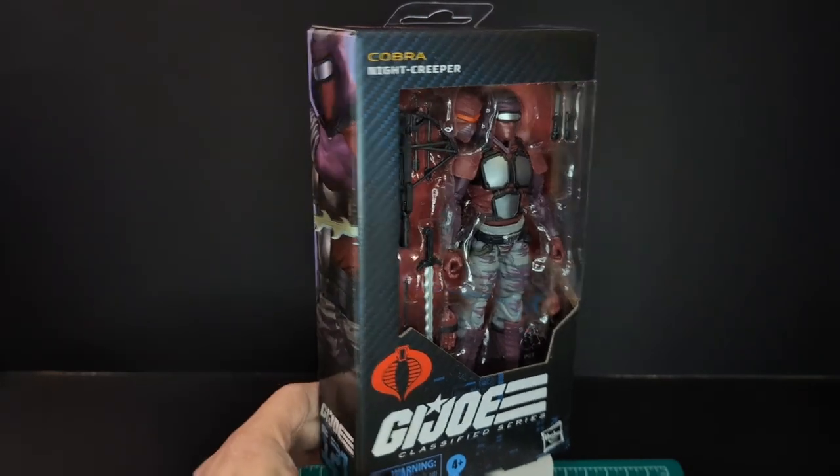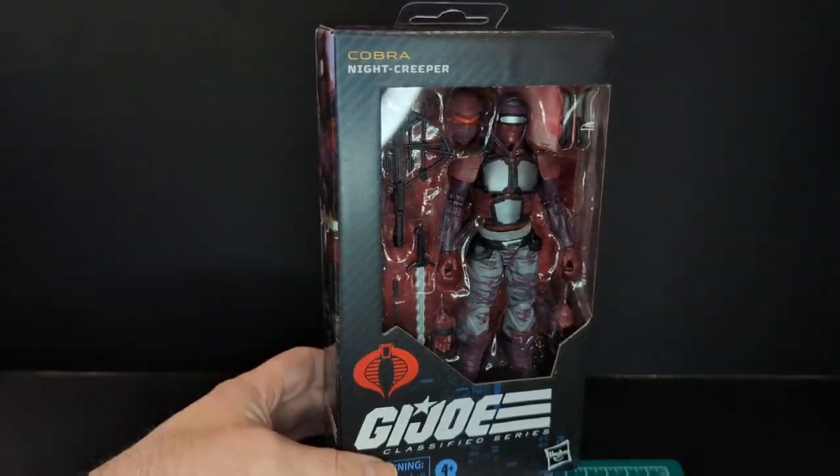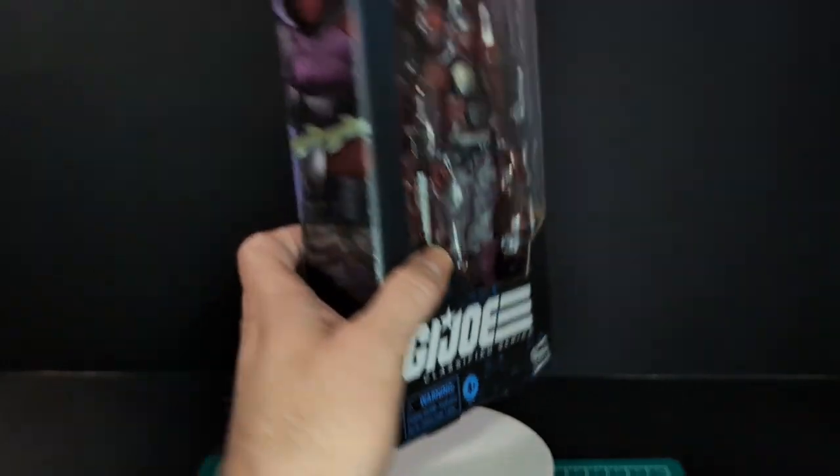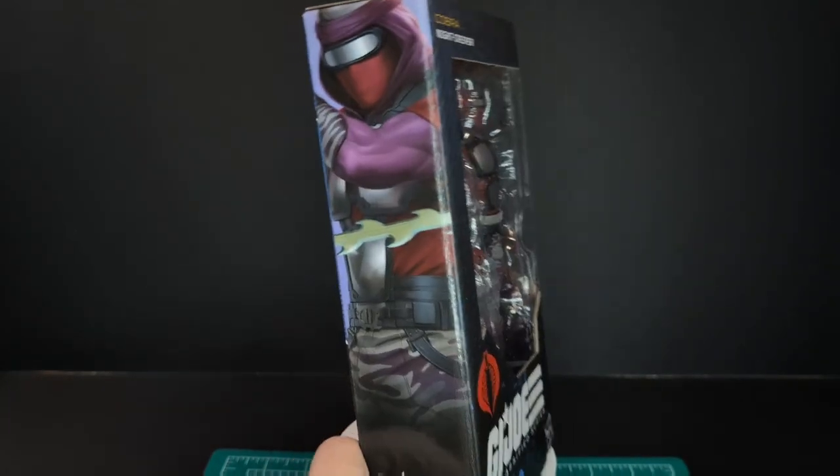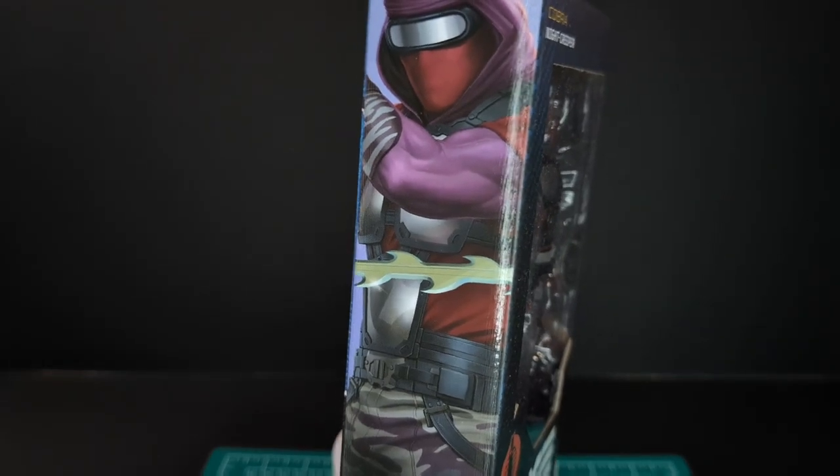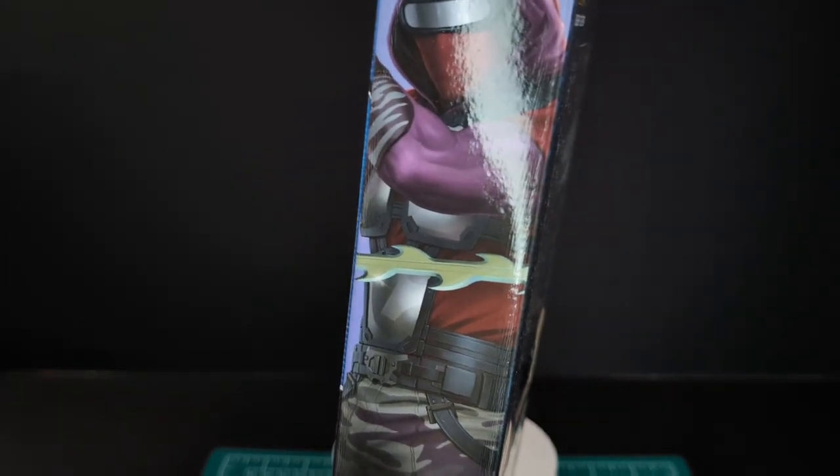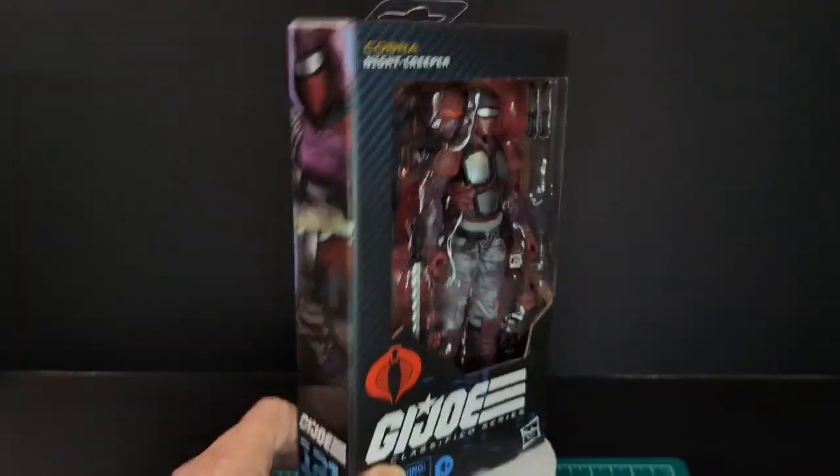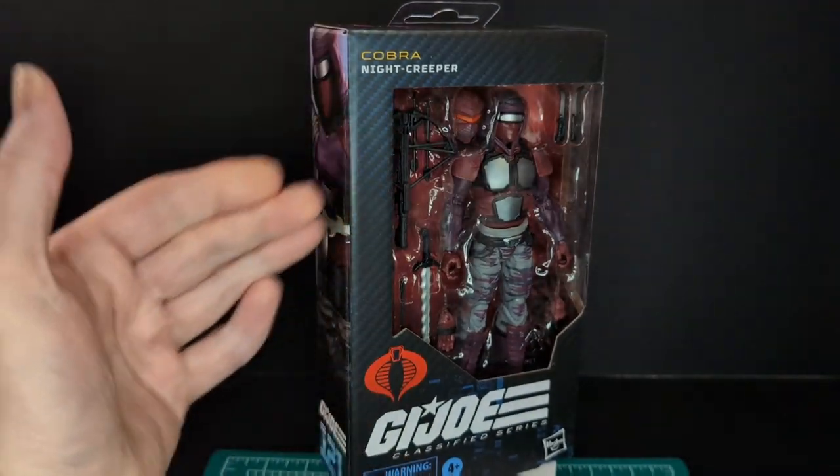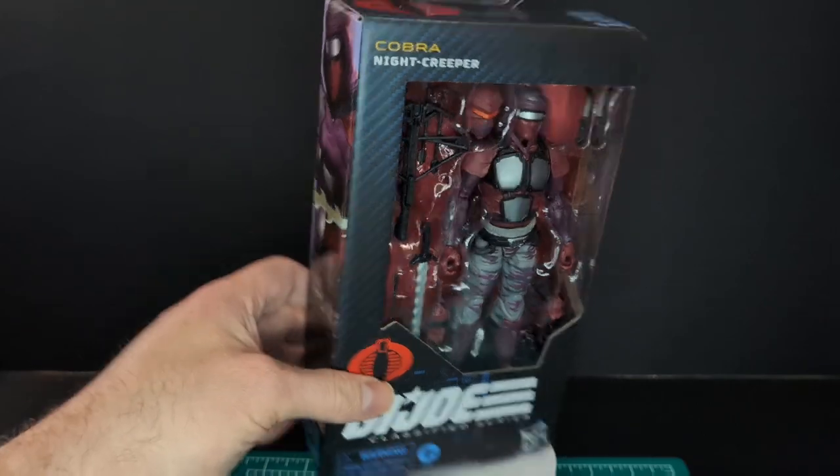We got the GI Joe logo, Hasbro logo, Cobra Night Creeper right at the top. We got the nice artwork on the side here, number 121 in the line. I do like this artwork, it looks very cool. And we have a nice window display of the figure and all the accessories.